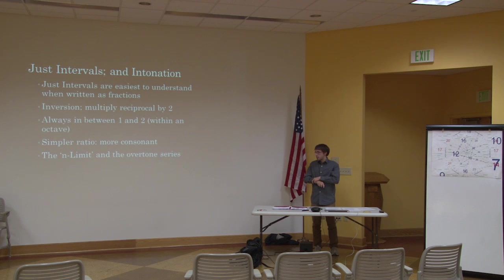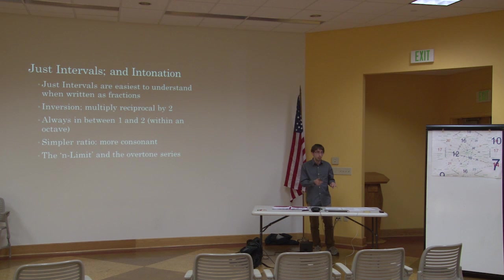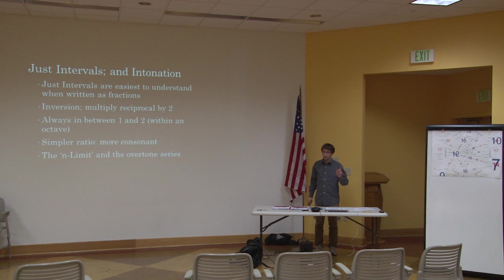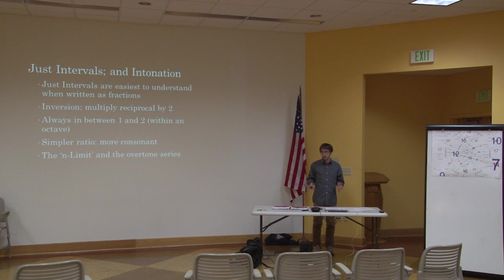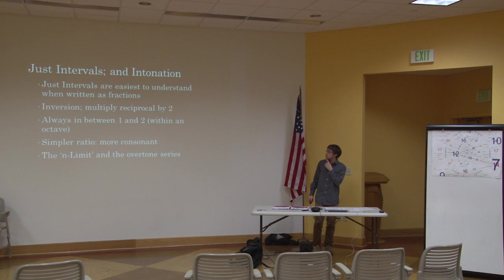To get an inversion of a just interval, you multiply the reciprocal by 2. So for example, 3/2 corresponds to a perfect fifth — like C and G on a piano. If I want to invert that, I multiply the reciprocal 2/3 by 2 to get 4/3, which is exactly the perfect fourth. Just intervals are always between 1 and 2, meaning they're within the octave. Using 1 only gives you the exact same note. Any powers of 2 yield octaves. Then 3 ends up being perfect fifths — only 3/2 and 4/3. And then the 5-limit is what we evolved to.